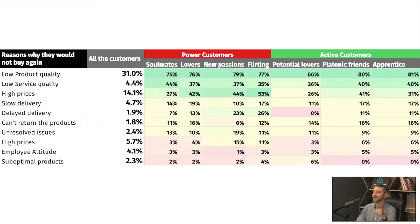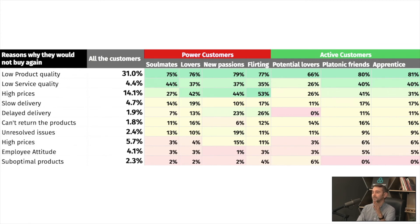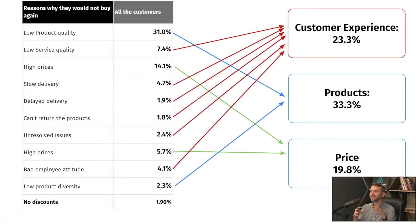In this example, it's clear that low product quality is the most important issue everywhere. But there are some anomalies as well: price is not a problem for the potential lovers, but it's one of the main problems for the new passions and the lovers. What is also important is to group those types of issues so that you can understand which are the main three things that you should be tackling next.